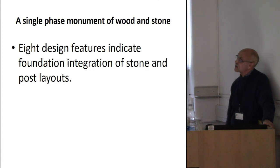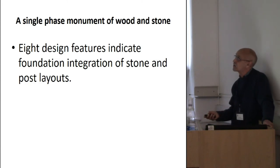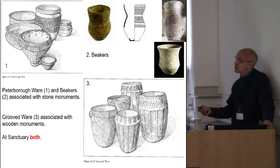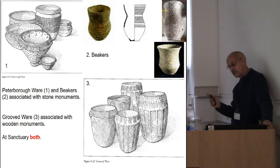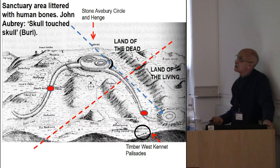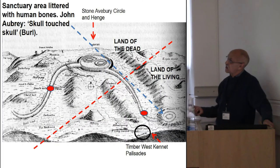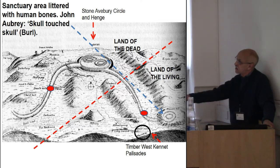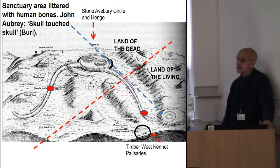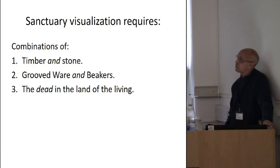So we've got eight design features which indicate that the monument integrated stone and posts from its foundation. And in terms of the pottery material culture discovered at the sanctuary, there is a mixture of pottery types that should be categorically distinct according to the materiality model — and they're not. We find both. And from antiquarian testimony, John Albury reported that skull touched skull surrounding the sanctuary, and yet the sanctuary is in the land of the living, not the land of the dead. So that categorical distinction breaks down.